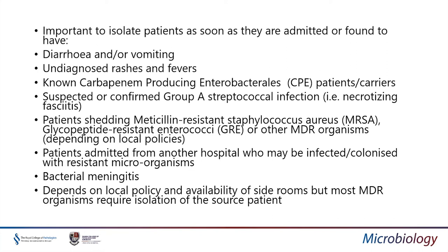It is important to isolate patients as soon as they are found to have a multi-drug resistant organism, diarrhoea and/or vomiting, undiagnosed rashes or fevers, Group A strep — for example necrotising fasciitis or pharyngitis — and patients admitted from another hospital who may be infected or colonised with resistant microorganisms. In the UK, anybody who has had hospital treatment abroad must be isolated in case they are harbouring a carbapenem-producing Enterobacteriales. Patients suspected of having bacterial meningitis must also be isolated because of the risk of spreading Neisseria meningitidis.